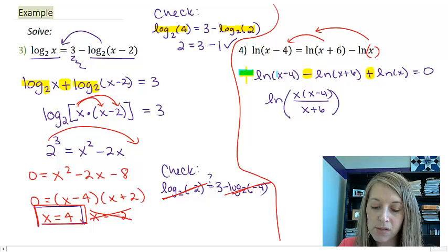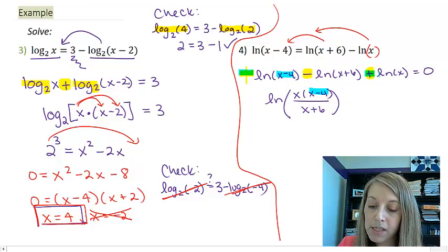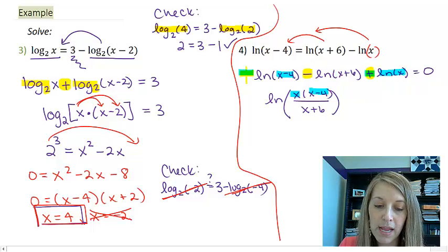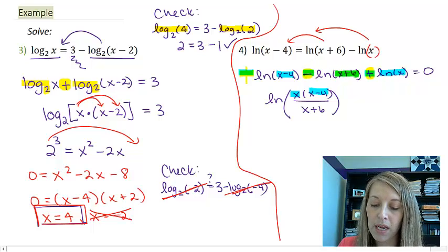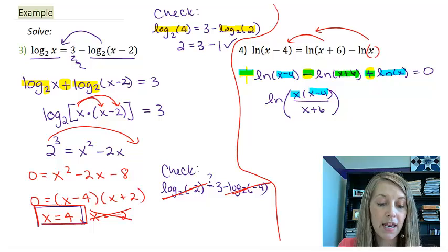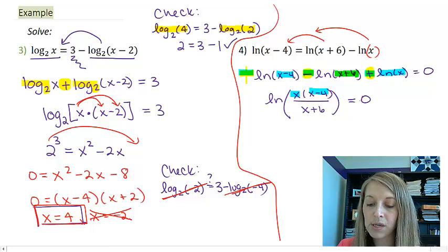So again, this one was positive, so I put it in the numerator. This one was positive, so I put it in the numerator. And this one was negative, so I put it in the denominator. And that is equivalent to 0.